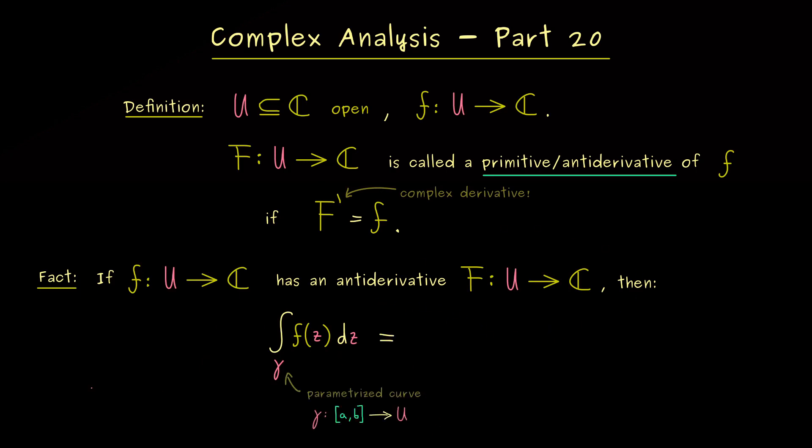For this maybe let's quickly visualize the curve gamma in the complex plane. There we can say we have a starting point gamma of a and an end point gamma of b. Of course the curve could do a lot of things in between but it starts at one point and it ends at one point. That's for sure. And exactly at these points we can evaluate the anti-derivative capital F.